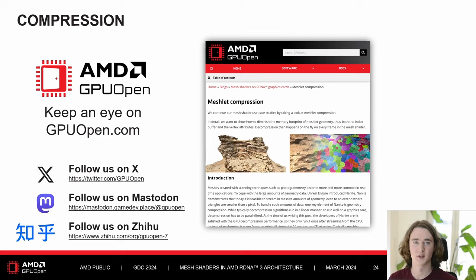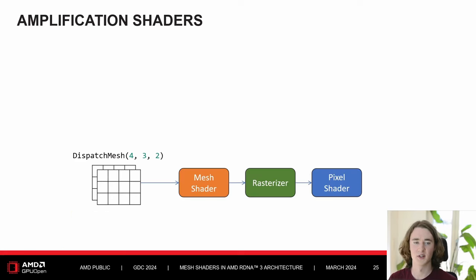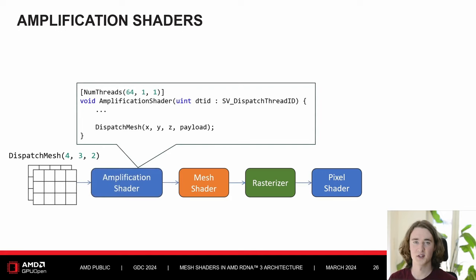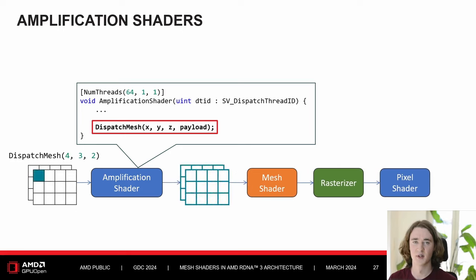What if we could go even faster? There is one shader stage I omitted — the amplification shader. It sits between the 3-dimensional dispatch grid from the CPU and the mesh shader, and as the name implies, is used to amplify the overall workload. The amplification shader has access to the same dispatch mesh command we use on the CPU to launch mesh shader work, but now on the GPU. Every amplification shader thread group can launch an entirely new 3-dimensional dispatch grid of mesh shaders, and can pass a payload along to all subsequently launched mesh shaders.